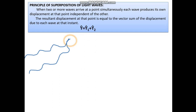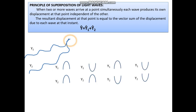The resultant displacement Y vector is equal to y1 vector plus y2 vector. If y1 and y2 are the amplitudes of each wave, either crest and crest, trough and crest, crest and trough, or trough and trough can come together at that point. Crest and crest gives y1 plus y2; trough and crest gives minus y1 plus y2; crest and trough gives plus y1 minus y2; and trough and trough gives minus y1 minus y2.